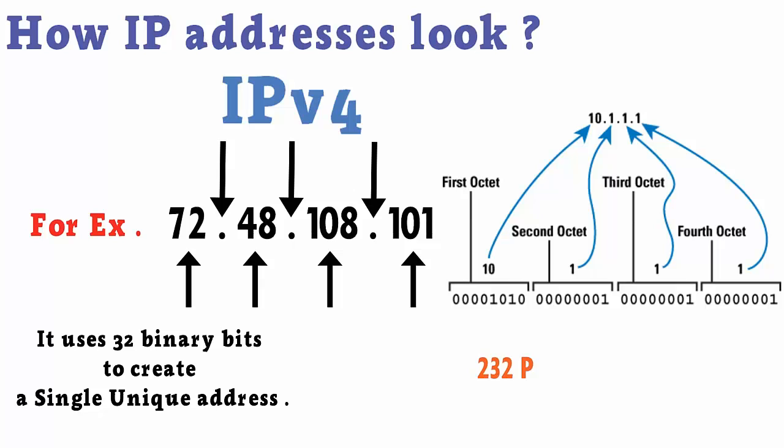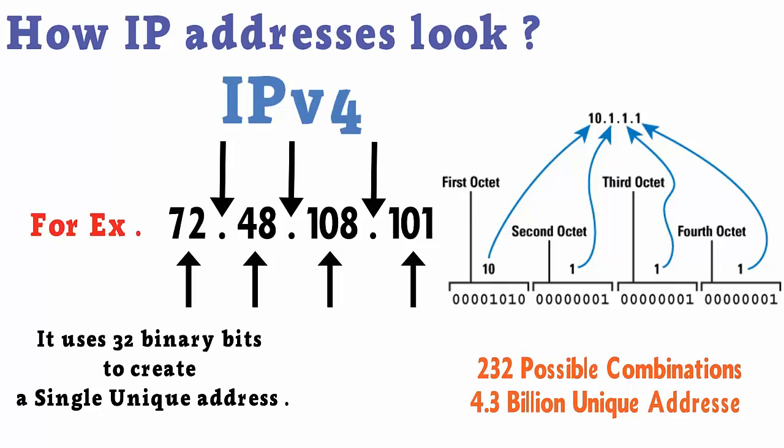Under IPv4, there are 2^32 possible combinations, which offers just under 4.3 billion unique addresses.